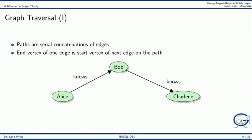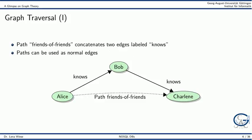An advantage of the graph data structure is that we can easily traverse it. Traversal is done by following so-called paths. A path is a serial concatenation of edges — that is, the end vertex of one edge is the start vertex of the next edge on the path. Here we see an example of a path.